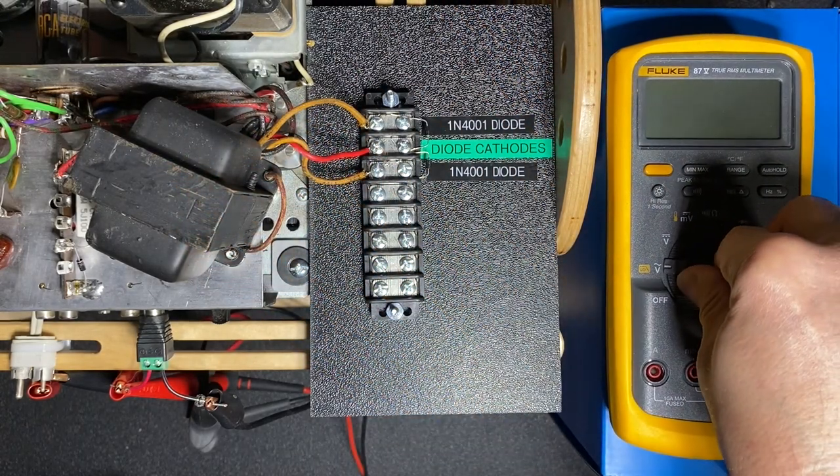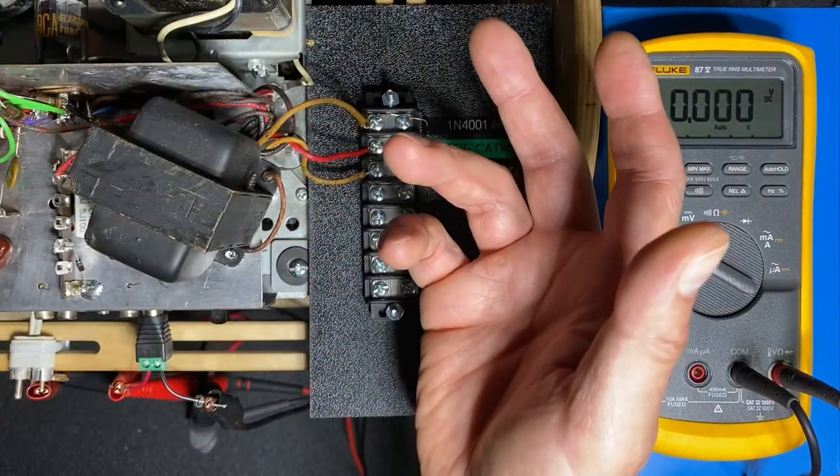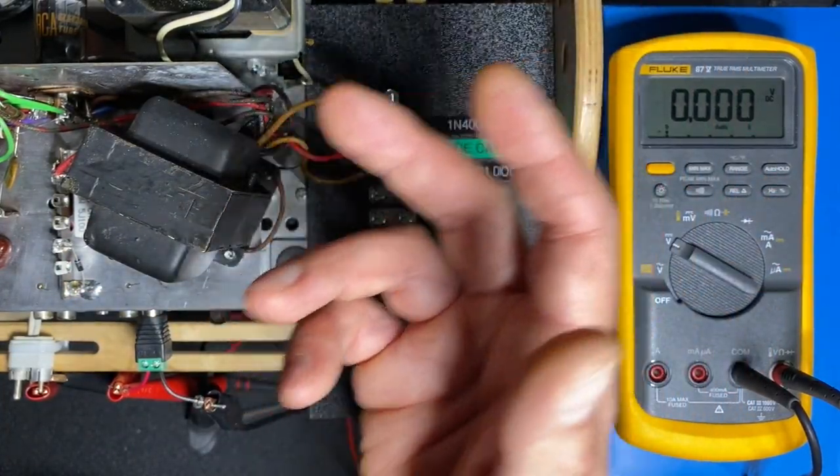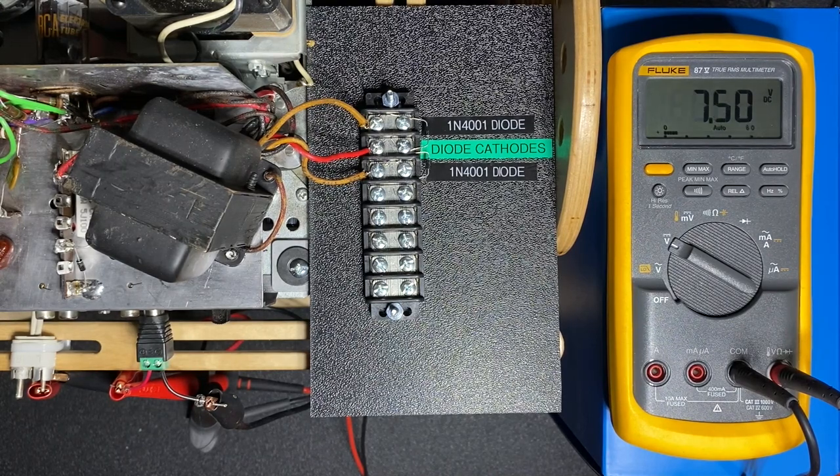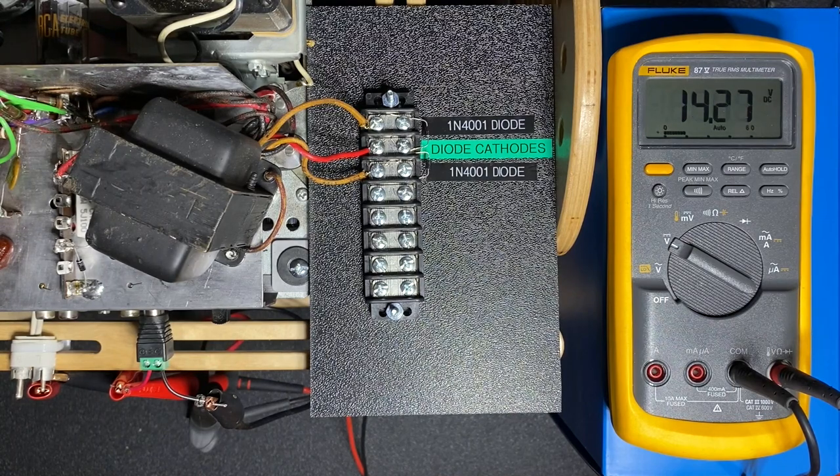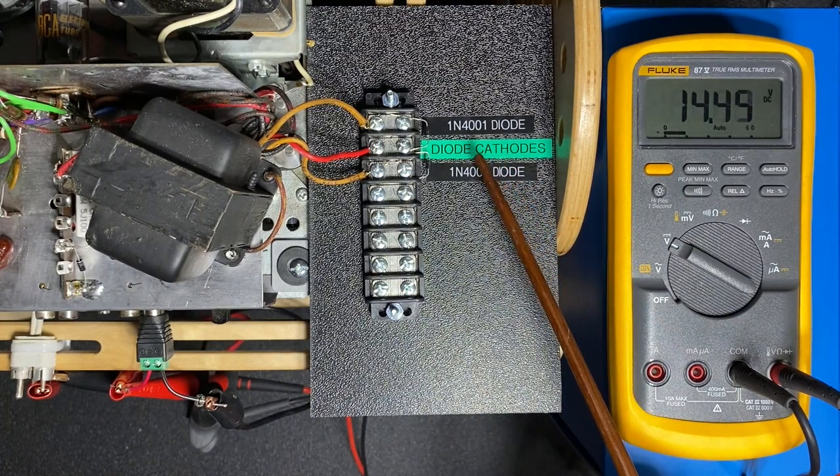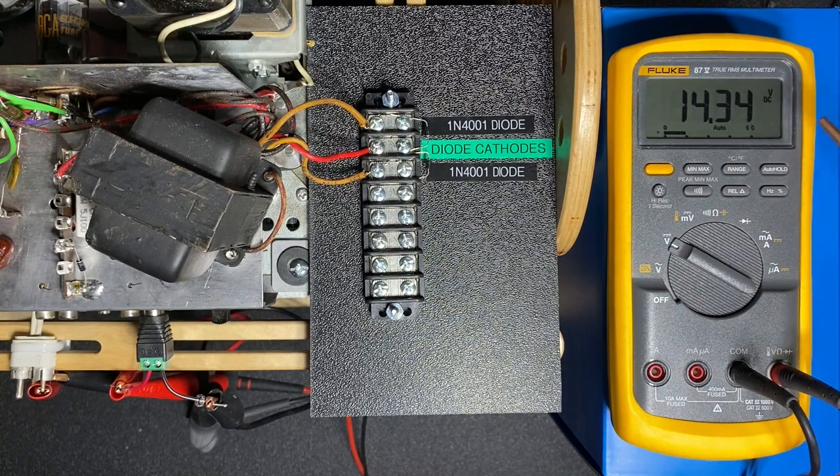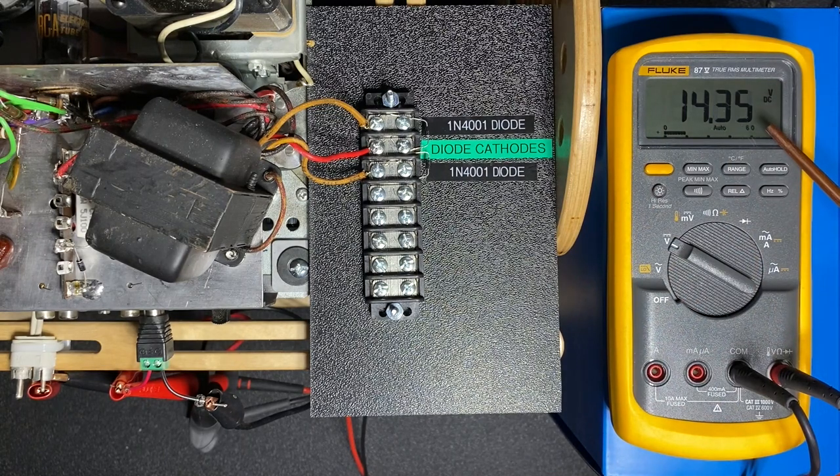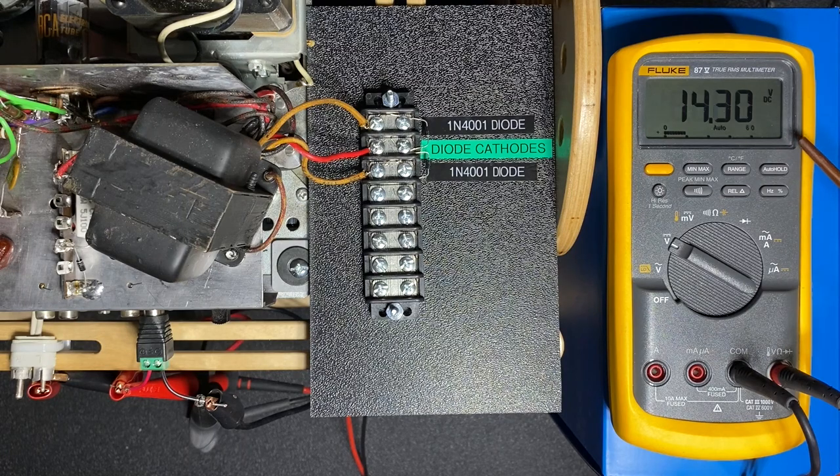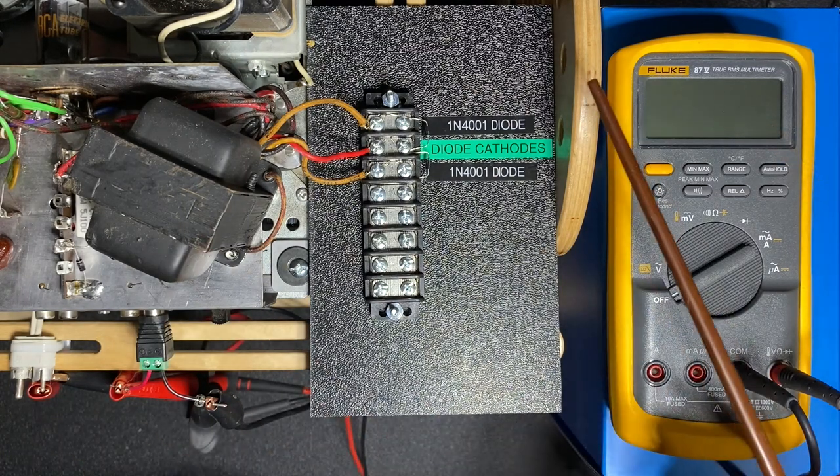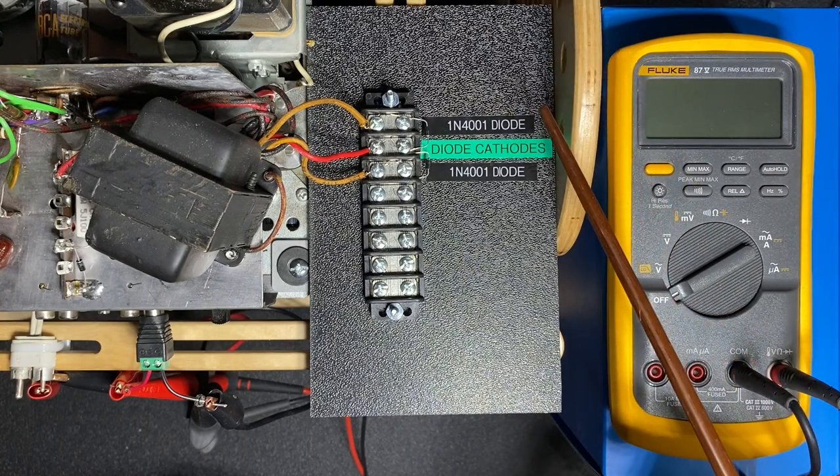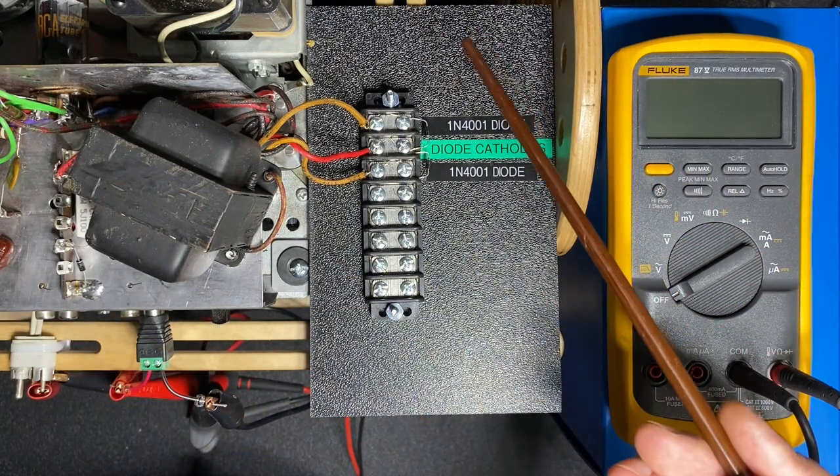Let's put our fluke into DC mode and I'll now use the Variac to slowly power up the player to 120 volts. Okay good you can see that the diodes are rectifying the DC signal and we have an output at just under 14 and a half volts and again we're looking for 12.7 volts so we need to drop this by about one and a half volts.